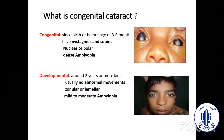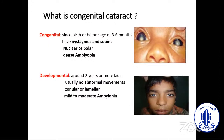What exactly is congenital cataract? It could be congenital — picked up at birth or as early as three to six months — presenting with nystagmus, squint, usually nuclear and polar, with a very dense envelope. The other group presents when starting school, when parents notice subnormal vision. They don't have nystagmus or squint, are usually zonular and lamellar, and have very good visual prognosis.